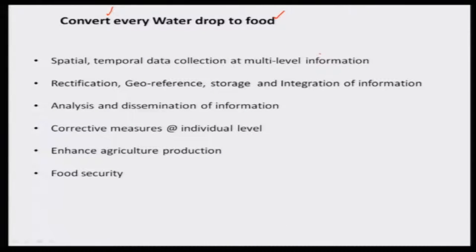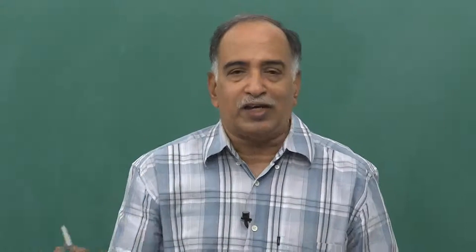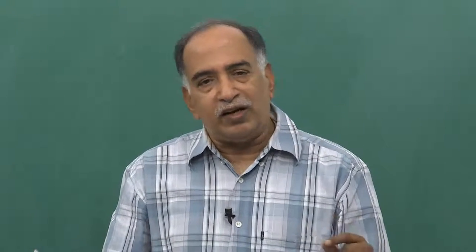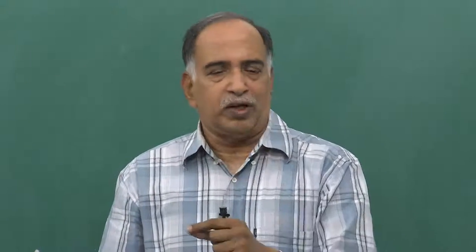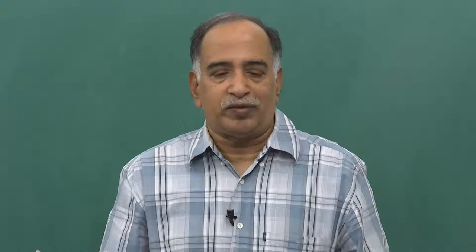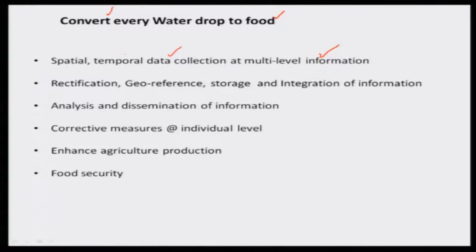Multi-level information should be there. Multi-level means you have the agriculture plot, villages, then area, then region, then the country — with different spatial accuracies, maybe 1 meter, 10 meters, 100 meters of that type of data collection. Temporal means how frequently you try to do that: daily, weekly, monthly or seasonal. This should be done in different geographical locations so that water could be saved.